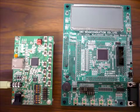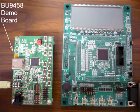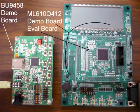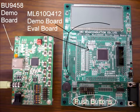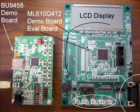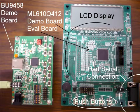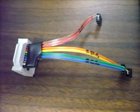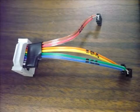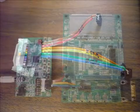Let's begin by taking a look at the equipment we will be using. The board to the left is a demonstration board for the BU9458 Series Media Decoder IC. The board to the right is Oki Semiconductor's ML610Q412 Evaluation Board mounted on top of a demo board, which includes pushbuttons, an LCD display, UART connection, and other various functions. As we will be connecting these devices using an I2C bus, we will use this connector to join the SDA, SCL, and ground pins of the BU9458 with the microcontroller.